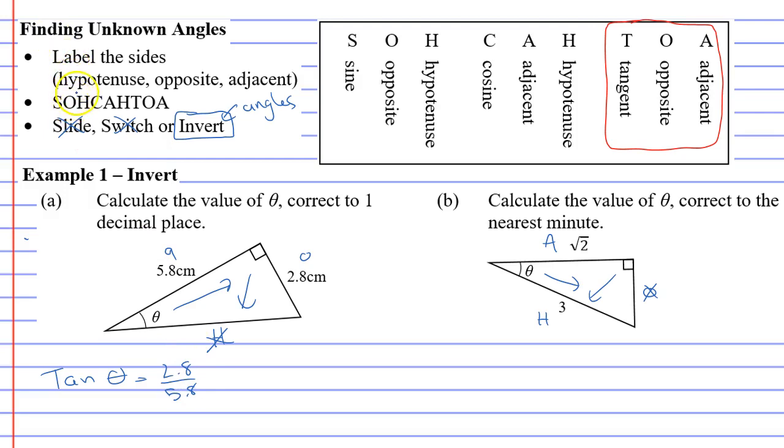So we've followed the first two steps. Now we've got to do what's called the inverse or to invert what we have here. And what we're going to do is we're going to bring the tan to the other side and we're going to put a little negative one there and we're going to put our fraction in brackets.